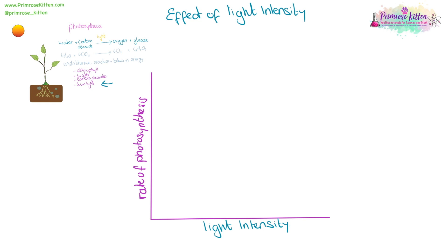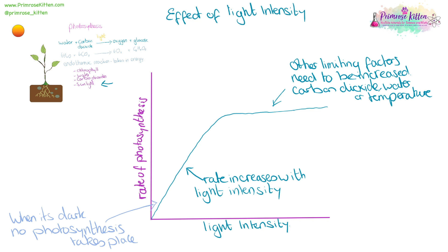Light intensity is important for the rate of photosynthesis. When it is dark at night time, we do not have lots of photosynthesis going on. As we get further through the day and get more light intensity, the rate of photosynthesis will increase until we get to a point where it is no longer the limiting factor and other things like the reactants or temperature need to be increased. After this point, we need to think about increasing other things.